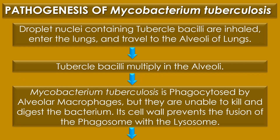Pathogenesis of Mycobacterium tuberculosis: The droplet nuclei containing tubercle bacilli are inhaled, enter the lungs and travel to the alveoli. Mycobacterium tuberculosis multiplies in the alveoli and is phagocytosed by alveolar macrophages, but they are unable to kill and digest the bacterium. Its cell wall prevents the fusion of the phagosome with the lysosome, which contains a host of antibacterial factors.